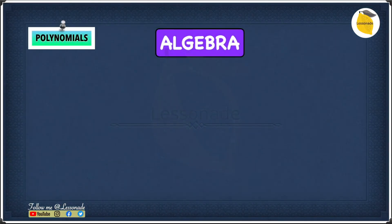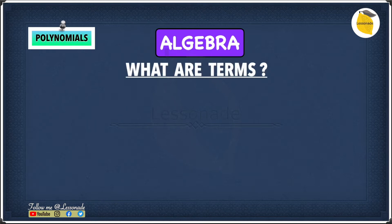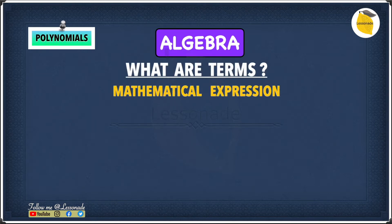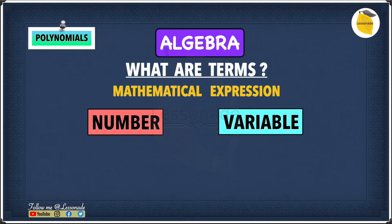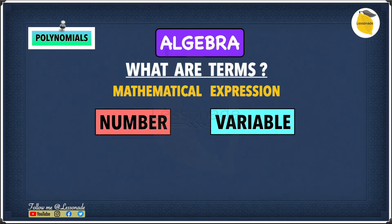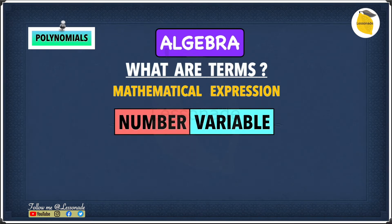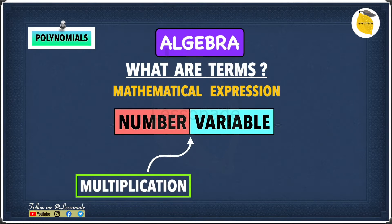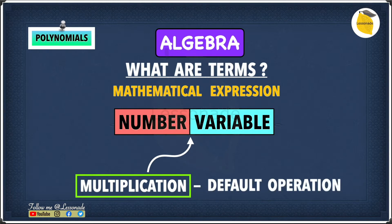Before we have a look at what are polynomials, let's start by having a look at what are terms. A term is basically a mathematical expression that consists of a number and a variable multiplied together. In algebra, we don't show the multiplication sign because if there is no arithmetic sign between a number and a variable, then it's considered to be multiplication — multiplication is the default operation.